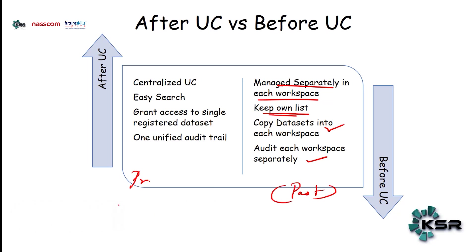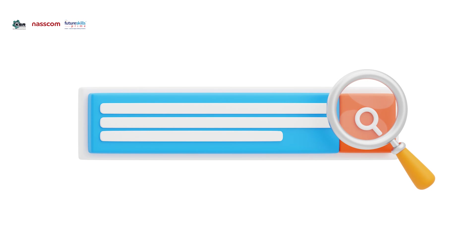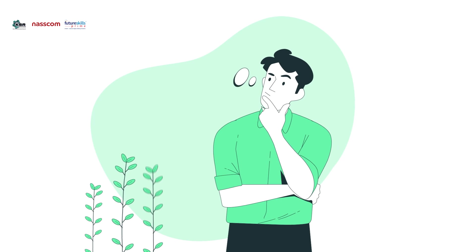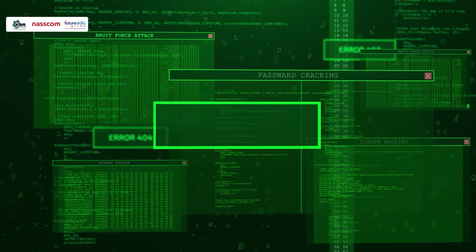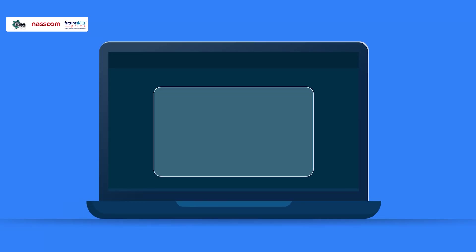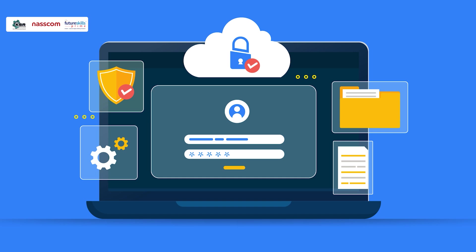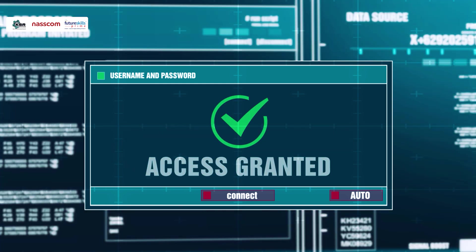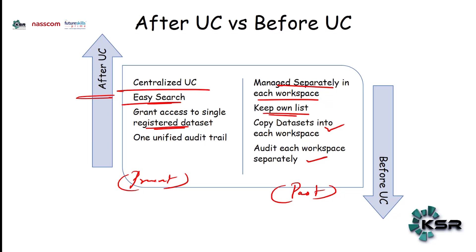In the present, after Unity Catalog came into picture, we have a centralized Unity Catalog. It becomes easy to search across projects and workspaces — you can easily search and know what is happening within the system. Granting access can be done at a workspace level so the entire team can access it, with privileges applied. One unified audit means all auditing can happen with respect to different workspaces.